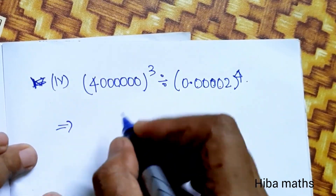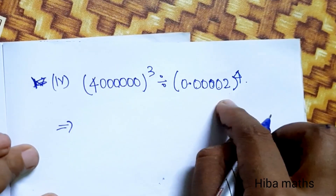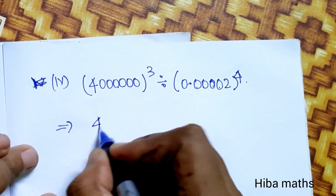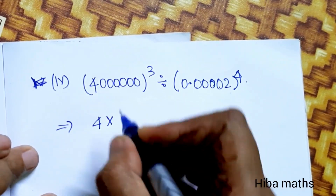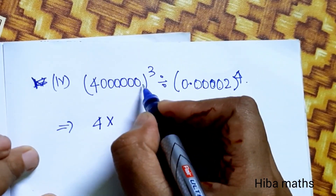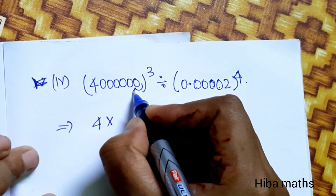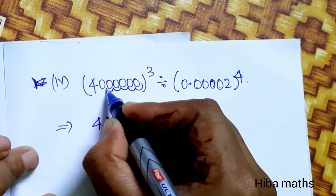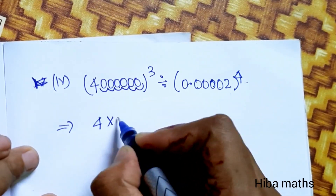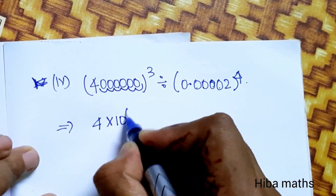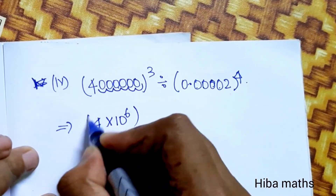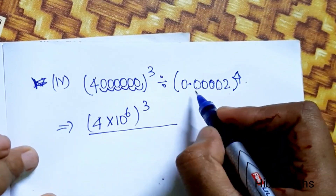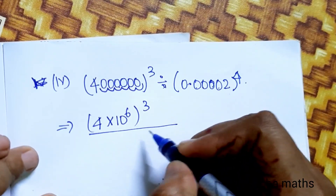Now let's do the division. Let's solve this first. 4 into — counting 1, 2, 3, 4, 5, 6 — 10 power 6, power 3, divided by...